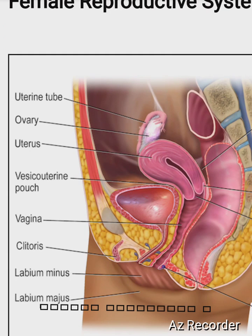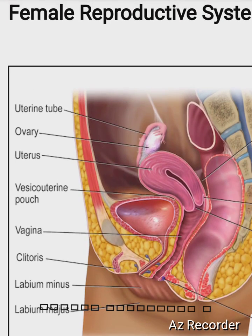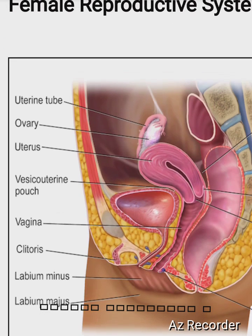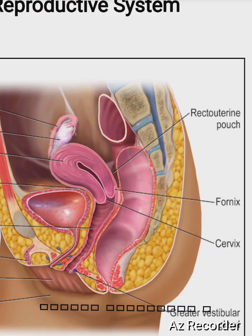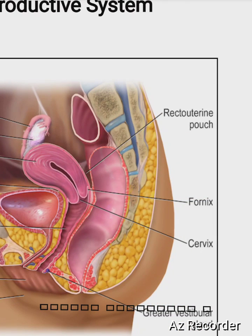This part is called the uterus, and that part is called the vesico-uterine pouch. This part is the vagina, and this part is called the clitoris. The lower part is called labium minus and labium majus.